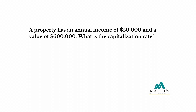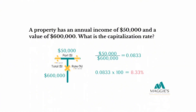Let's calculate the cap rate for a property with an annual income of $50,000 and a value of $600,000. Place the $600,000 value in the total column and the annual income of $50,000 in the part section on top. Now you just divide — that gives you 0.0833. Convert that decimal to a percent by multiplying by 100, and you get a cap rate of 8.33%.